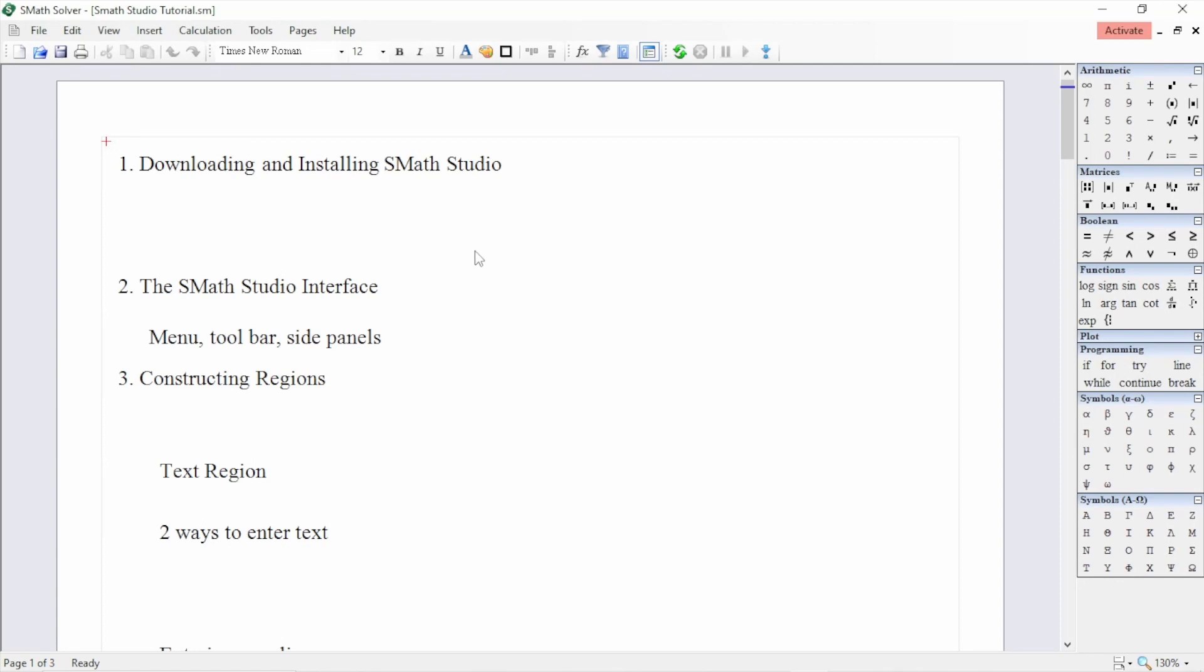The Smath Studio interface consists of the menu bar, toolbar, and the side panels. The menu bar and the toolbar are very similar to other Windows desktop applications with the addition of other specific tools to Smath Studio. The side panel on the other hand contains items to insert mathematical functions, symbols, and programming logic. I will show you how to use them as we go along with this tutorial.